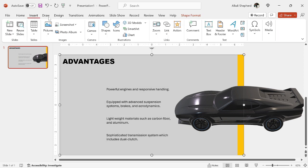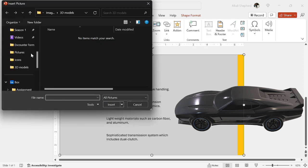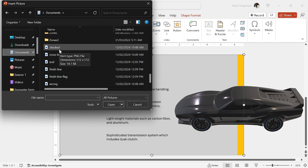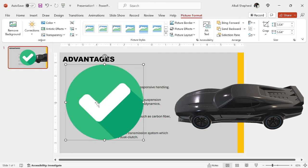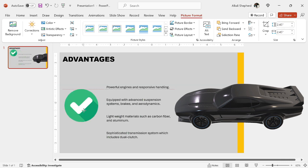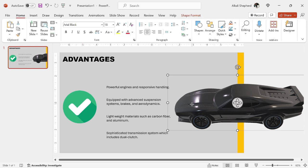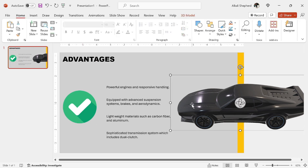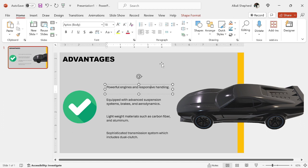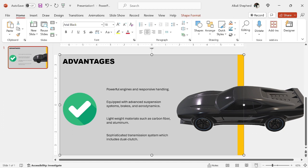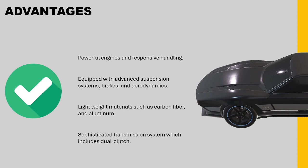Come back to insert, then come to pictures. Now I'll be inserting an icon. I downloaded this from flaticons.com — feel free to search that up on the internet. Quickly adjust the size of this icon. Now you should have something like this.